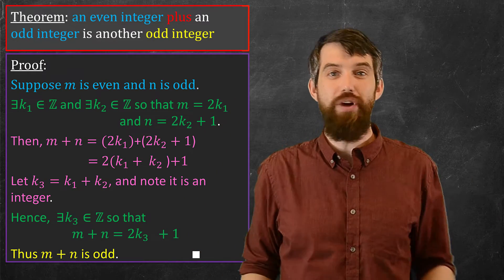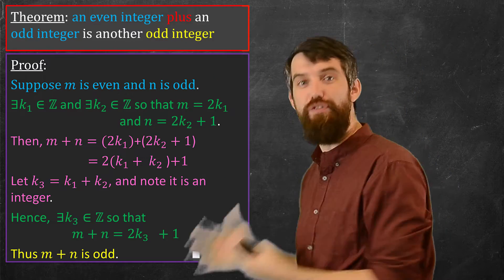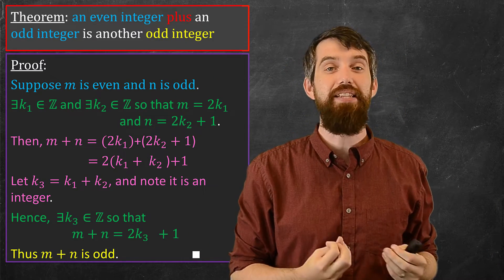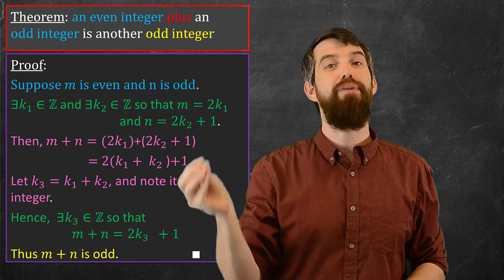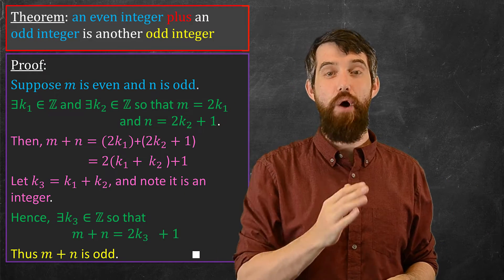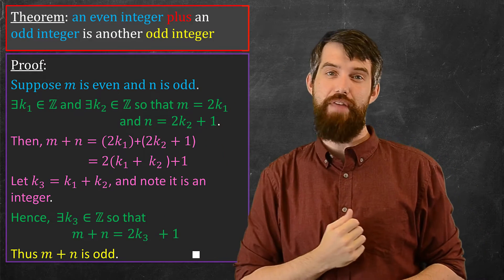So let's think about the structure of this. We've started at the beginning, we've gone to the end. I am now compelled to believe that indeed, in every scenario, the sum of an even and an odd has to be an odd. And this proof is what convinces me of that particular claim.